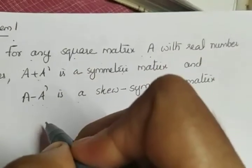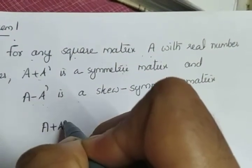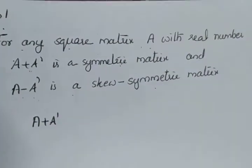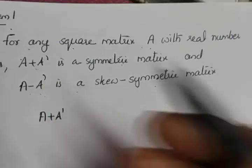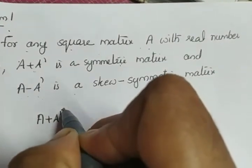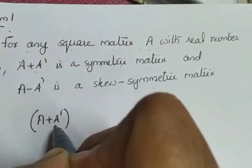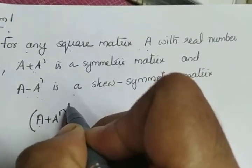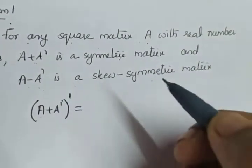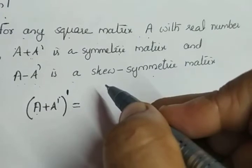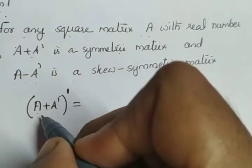If we want to check — to prove a matrix is symmetric, what we have to do is just take the transpose and show that it is the same as A. So here our given matrix is A plus A transpose. Take the transpose of it. We have the property that (A + B) transpose equals A transpose plus B transpose.